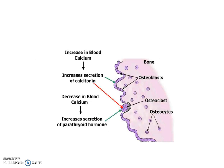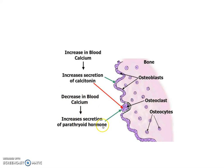Here's a schematic. As you can see, when there's an increase in blood calcium, this increases the secretion of calcitonin, which activates osteoblast formation and inhibits osteoclasts. However, when there's a decrease in calcium in the blood, there's an increase in secretion of the parathyroid hormone, which activates osteoclasts.